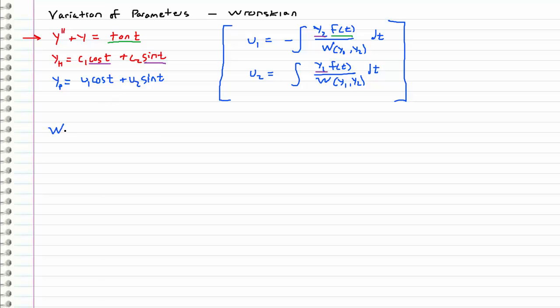The Wronskian of y1 and y2 is equal to the determinant of y1 and y1 prime, and then y2, y2 prime. So let's go ahead and use these formulas to determine u1 and u2 directly and solve this non-homogeneous differential equation.